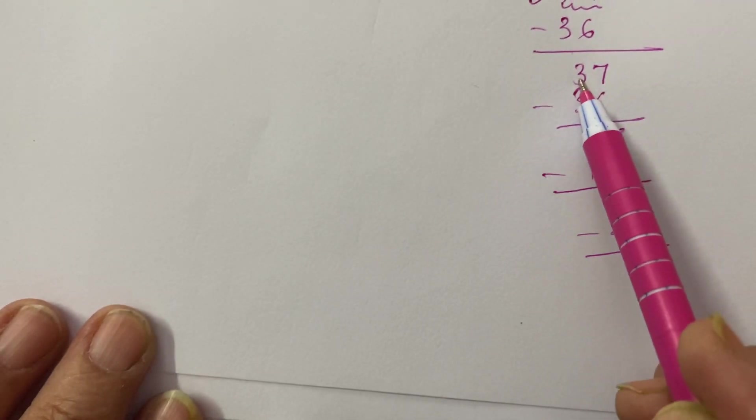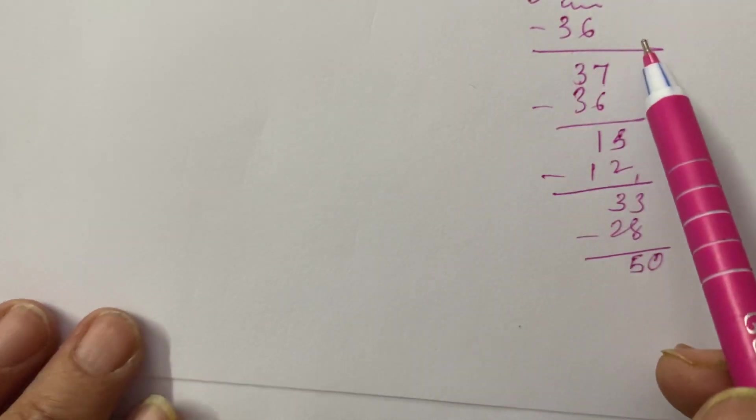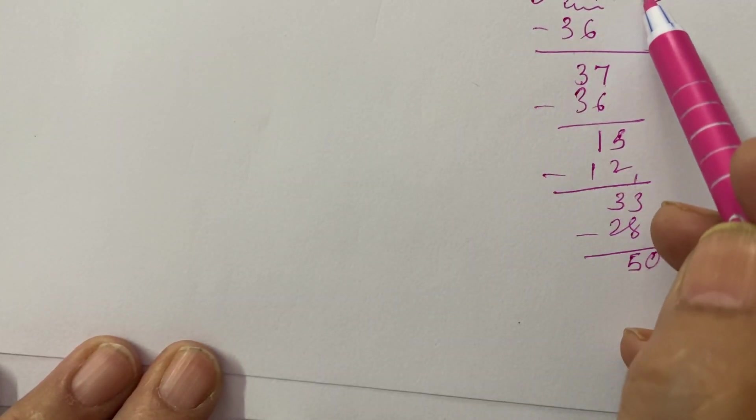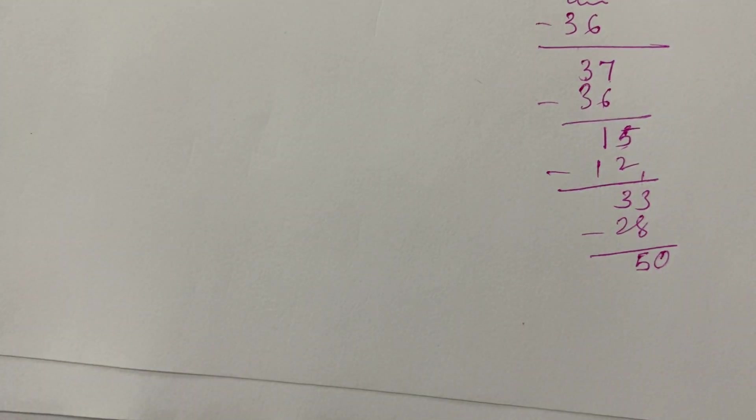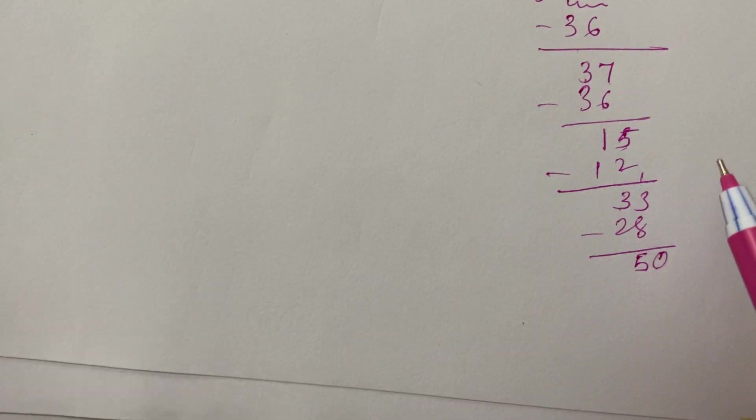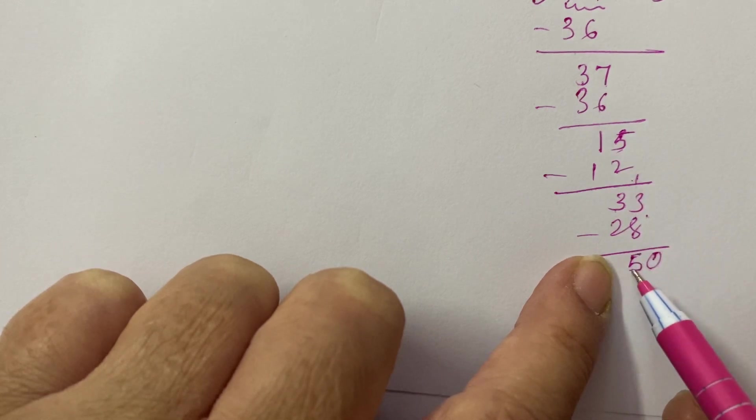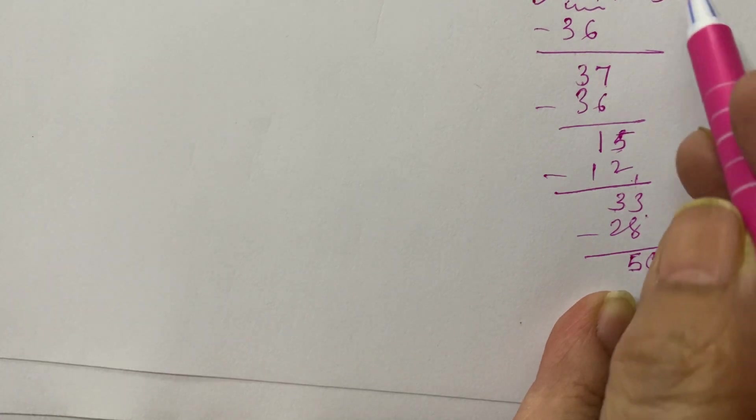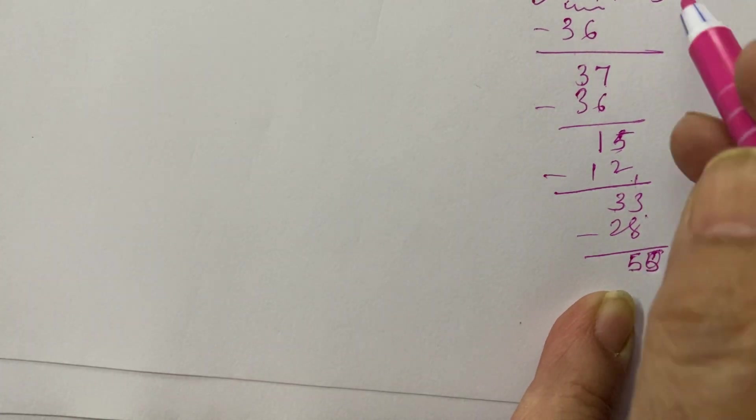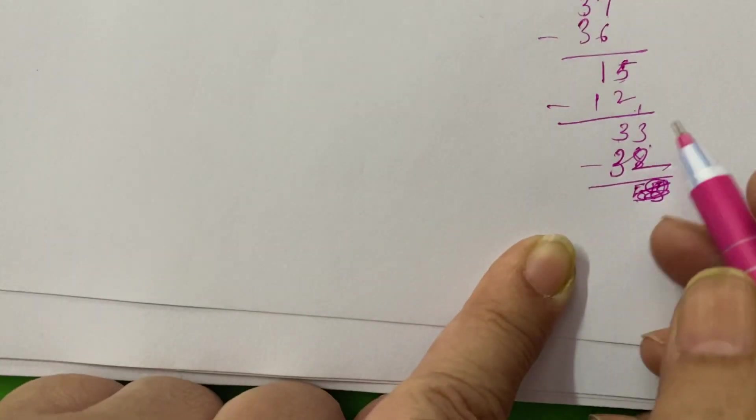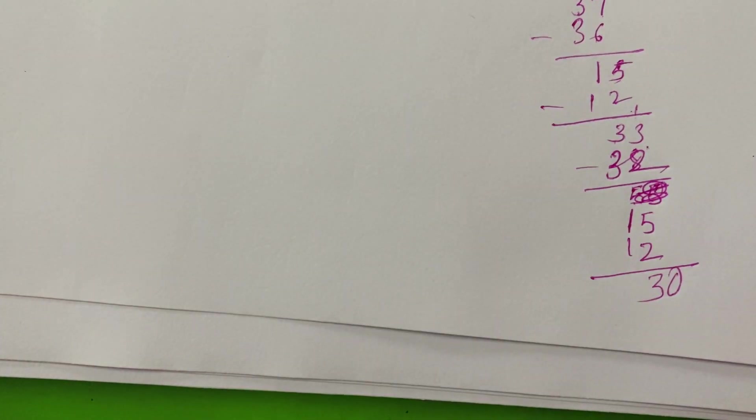Then 4 how many times into 33? 4 sevens are 28. 28 from 33, how many remain? Okay, 5. You have 5 over here. Now will come your decimal point. The decimal point comes. So that will give you 50. 4 sevens are 28, remainder 2. You'll put 0, 4 fives are 20. 12, remainder 3. 0. 4 sevens are 28.